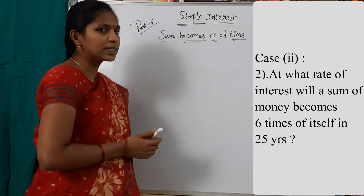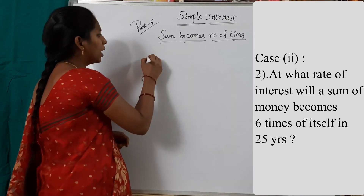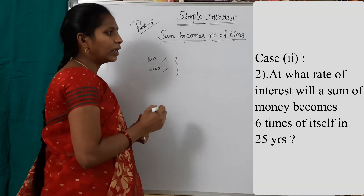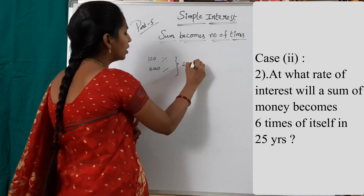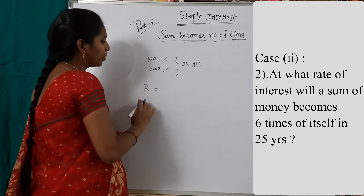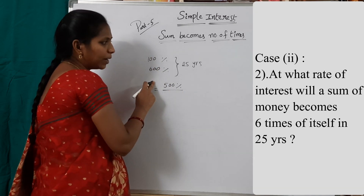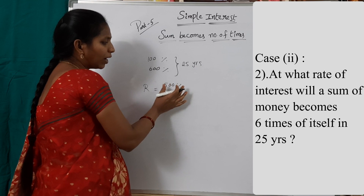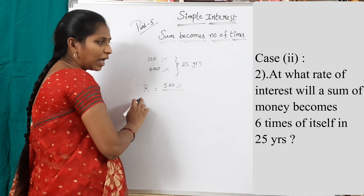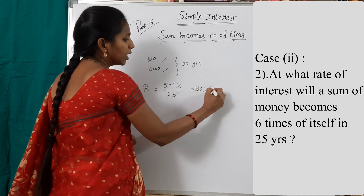Second question in Case 2: At what rate of interest will a sum of money become 6 times itself in 25 years? Sum = 100%, amount = 600%, time = 25 years. Difference = 500%, which is the simple interest. Rate R = 500% / 25 = 20% per annum.